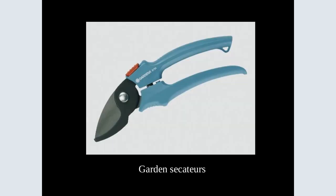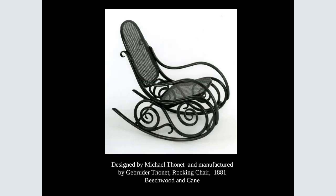Lines can steer our attention in a particular direction or help convey the emotional effect the artist is intending. Take a look at this garden chair — it's just one continual line. It's a functional piece you'd use in your garden, but it's actually quite elegant. These curvy lines are like the way a vine grows — just a continual line.